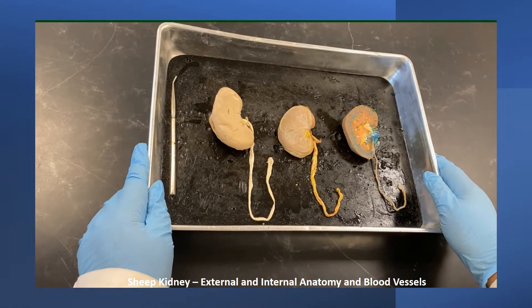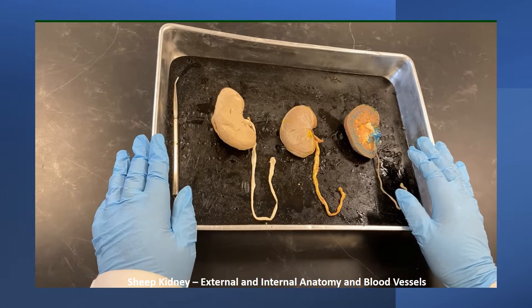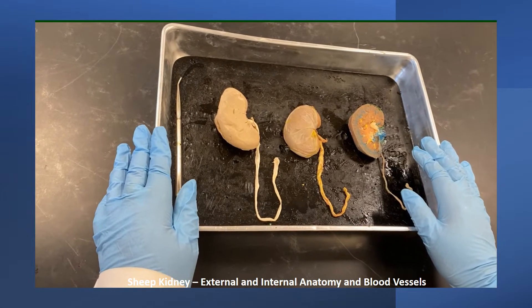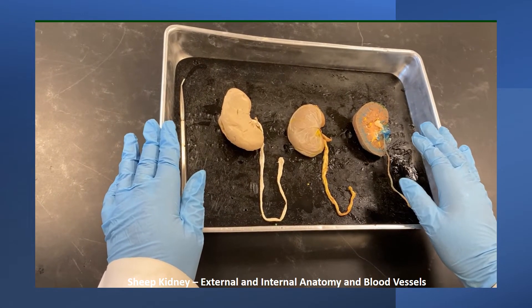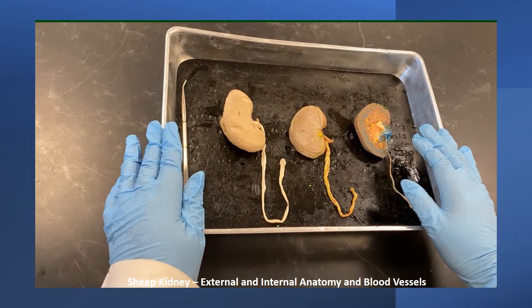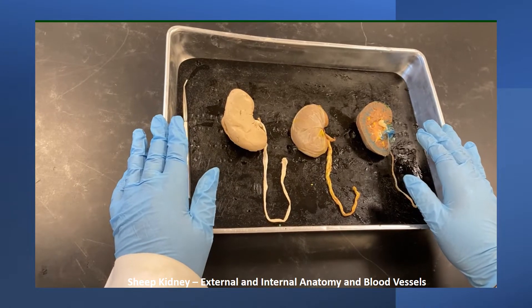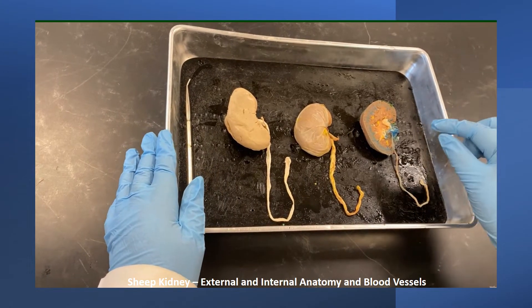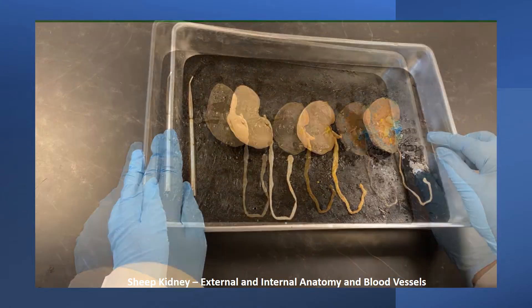We will look at sheep kidney today. We will start with the whole kidney, then we will look at internal structures and then the distribution of blood vessels.